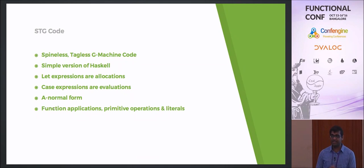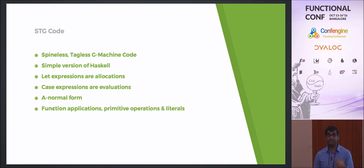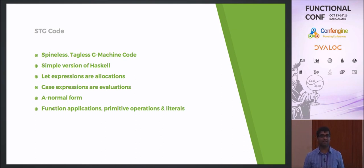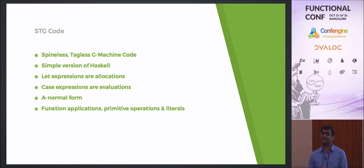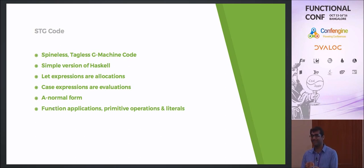STG stands for Spineless Tagless G-machine — an abstract reduction machine written in a research paper by Simon Peyton Jones. This mechanism is the reason why Haskell is as efficient as it is today. STG code is actually just a reduced form of Haskell where all you have are cases and lets. It's very tricky to execute Haskell in your head like you would a C program line by line; I want to help you visualize it better.